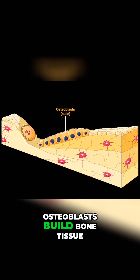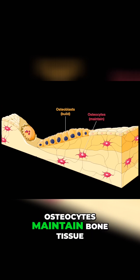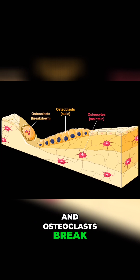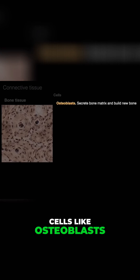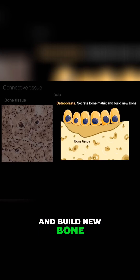Osteoblasts build bone tissue, osteocytes maintain bone tissue, and osteoclasts break down bone tissue. Bone tissue has cells like osteoblasts that secrete bone matrix and build new bone.